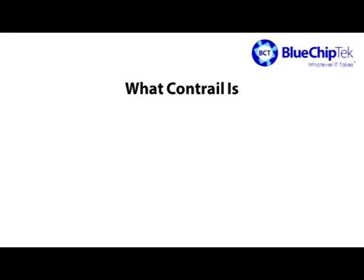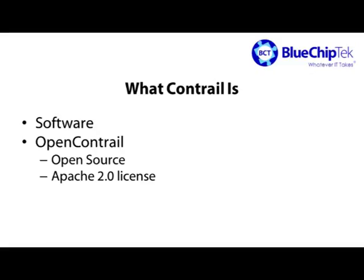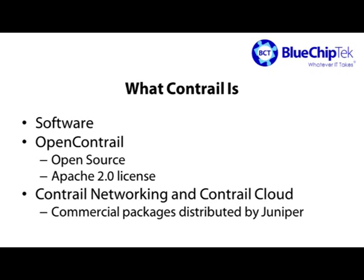So, what is Contrail? Contrail is software, available in two forms. Open-source software, officially known as OpenContrail — you can download the source code from GitHub and modify, compile, and use it yourself almost any way you want. Contrail is published under the Apache 2.0 license, which gives you a lot of freedom. Contrail is also available as commercial software distributed by Juniper Networks, packaged as either Contrail Networking or Contrail Cloud. The distinctions between the two commercial packages aren't important for today's discussion.